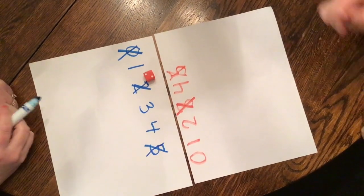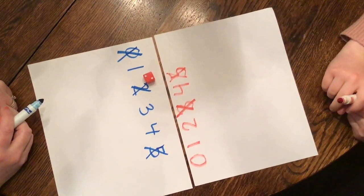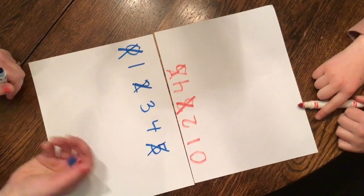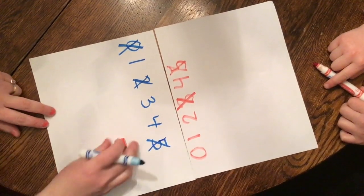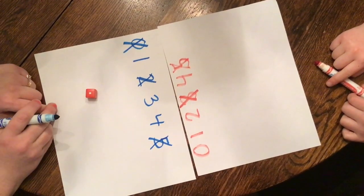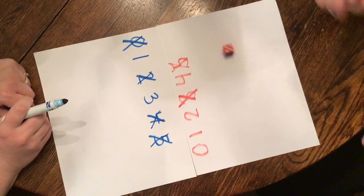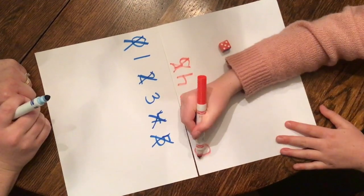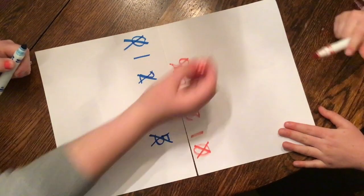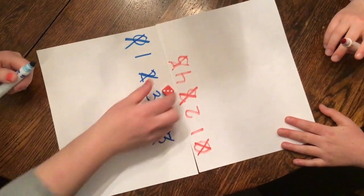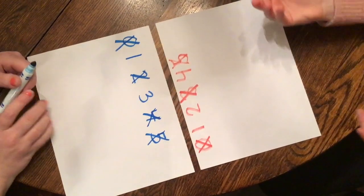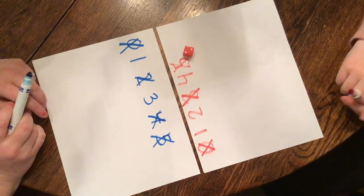Cross those out like that. Uh-oh, so now you can't go, but you get to keep playing. The first person to get them all crossed out is the winner, so I got a one. One and four make five, so I'll cross out four. Five and zero. I got a three. Can't go, because three and two make five.